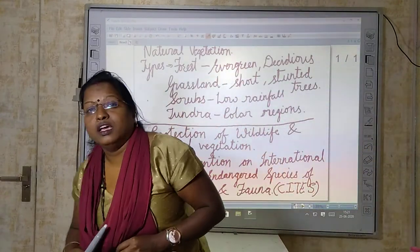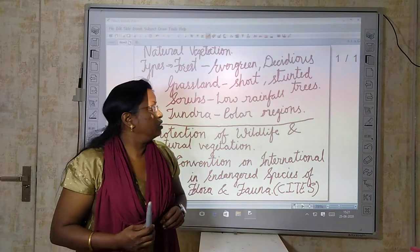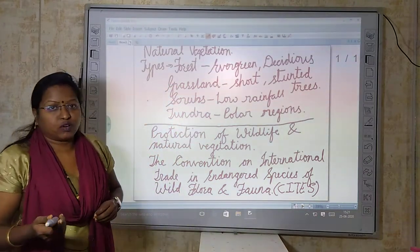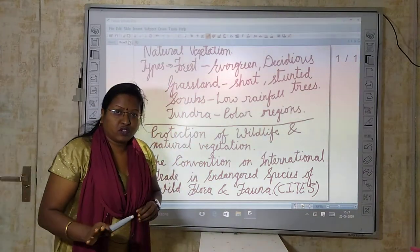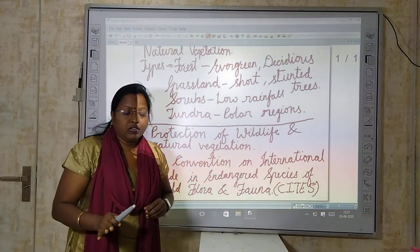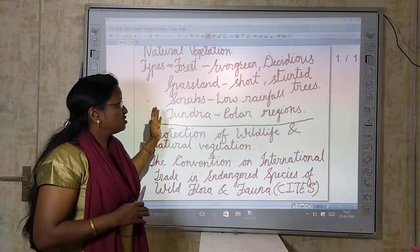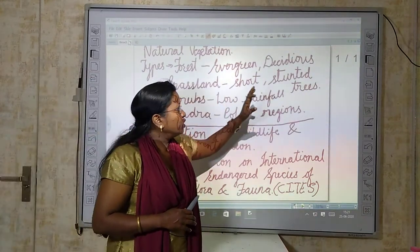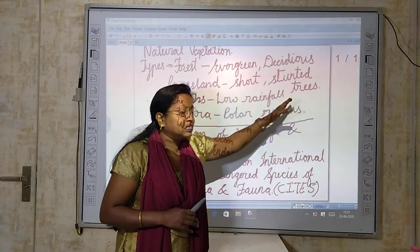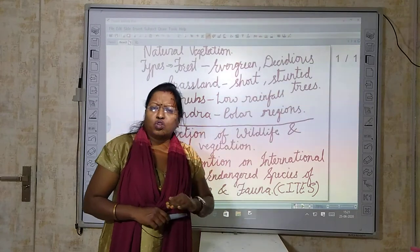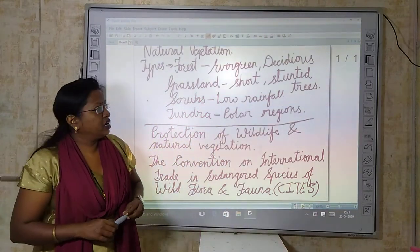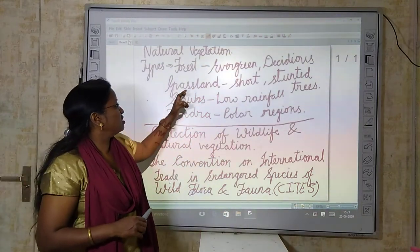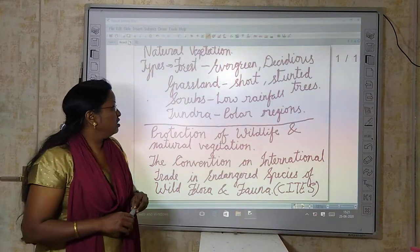The second type of natural vegetation is grassland. Grasslands are areas covered with grasses on the surface of the soil. Grassland also includes stunted trees — these short-sized trees are also included in grassland.